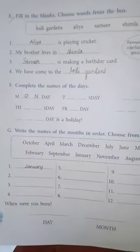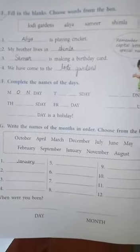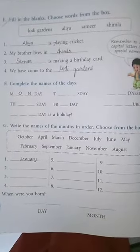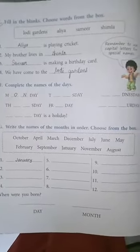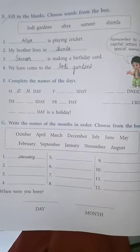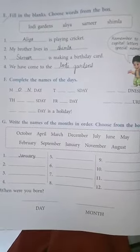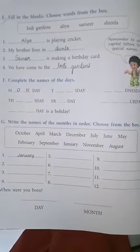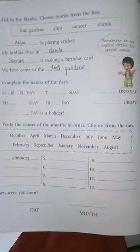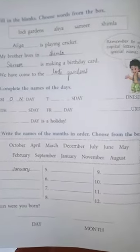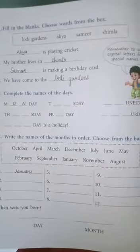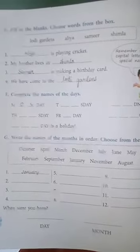Let's move on to exercise F. Complete the names of the days — you all know the names of the days. You have to fill in the correct spellings. Monday, Tuesday, Wednesday, Thursday, Friday, Saturday and Sunday is a holiday. You have to do this on your own.